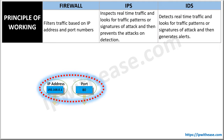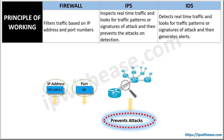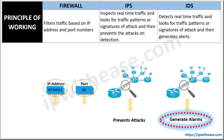A firewall allows traffic based on a set of configured rules. It relies on IP source, IP destination addresses, and ports. A firewall can deny any traffic that does not meet the specific criteria. IPS inspects real-time traffic and looks for traffic patterns and signatures. Based on its detection, it will prevent the attack. IDS will also detect anomalies with the same approach; however, it will send an alert and not disrupt the traffic.